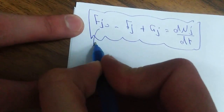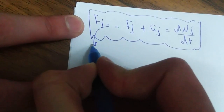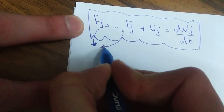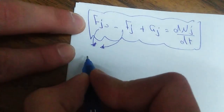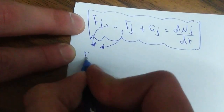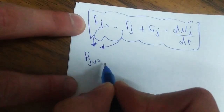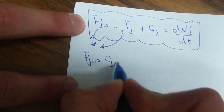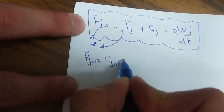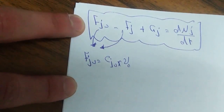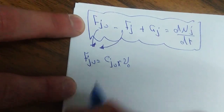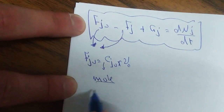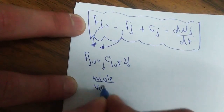الـ F of J naught والـ F of J هي عبارة عن concentration في volumetric flow rate. الـ Concentration هو مول per volume، والـ volumetric flow rate هو عبارة عن volume per time.